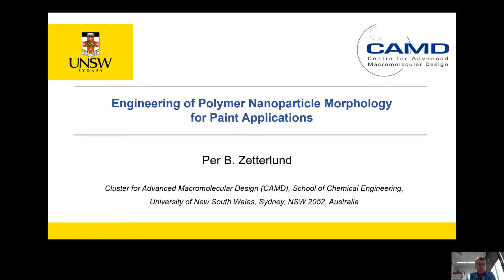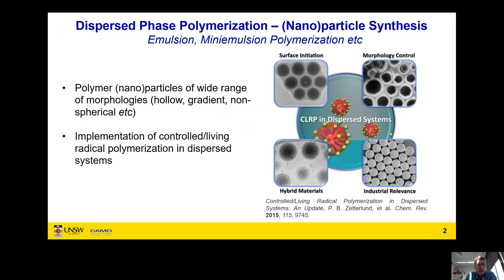The title of my talk is Engineering of Polymer Nanoparticle Morphology for Paint Applications. I'm going to start by briefly introducing the work we do in my group. We're mainly concerned with dispersed phase polymerization from the perspective of polymer and nanoparticle synthesis. We mainly work with emulsion and mini emulsion polymerizations and also dispersion polymerization — different types of heterogeneous polymerizations.